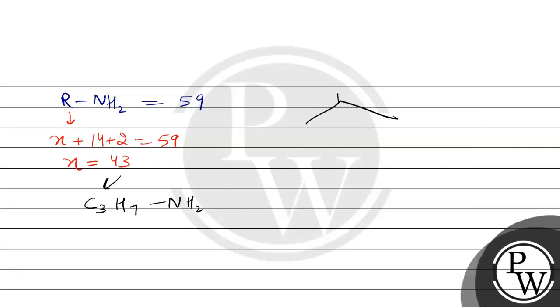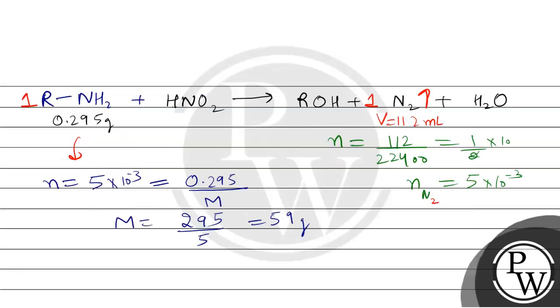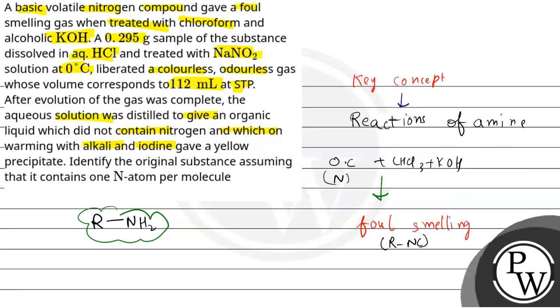So, the primary amine has a molecular weight of 59 with R = 43. There are two structural possibilities: one amine with a 3-carbon chain (n-propylamine, CH₃CH₂CH₂NH₂, MW = 59) and another amine with 3 carbons in a branched arrangement (isopropylamine, CH₃CH(NH₂)CH₃, MW = 59). These are the two possibilities. What is the molecular weight of each?